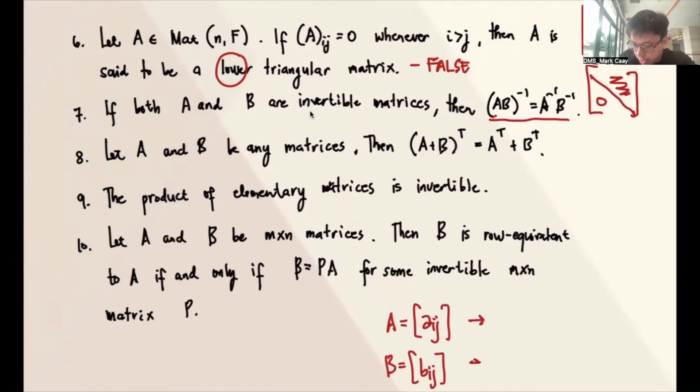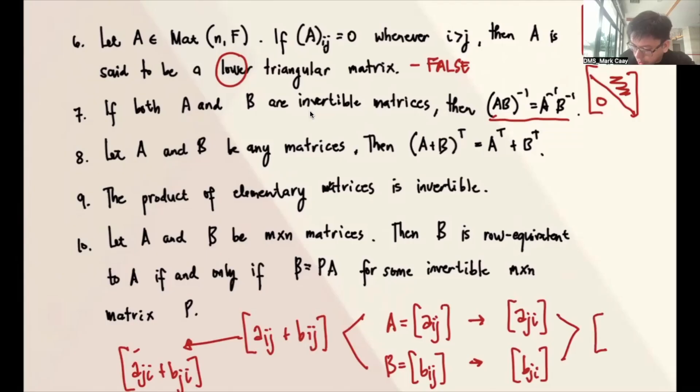Now, if you add them, the result is Aij plus Bij. And if you do the transpose of this, you have Aji plus Bji, which is the same as the sum of this: Aji plus Bji. So basically, this is true. So this is true. And number 7 is false.